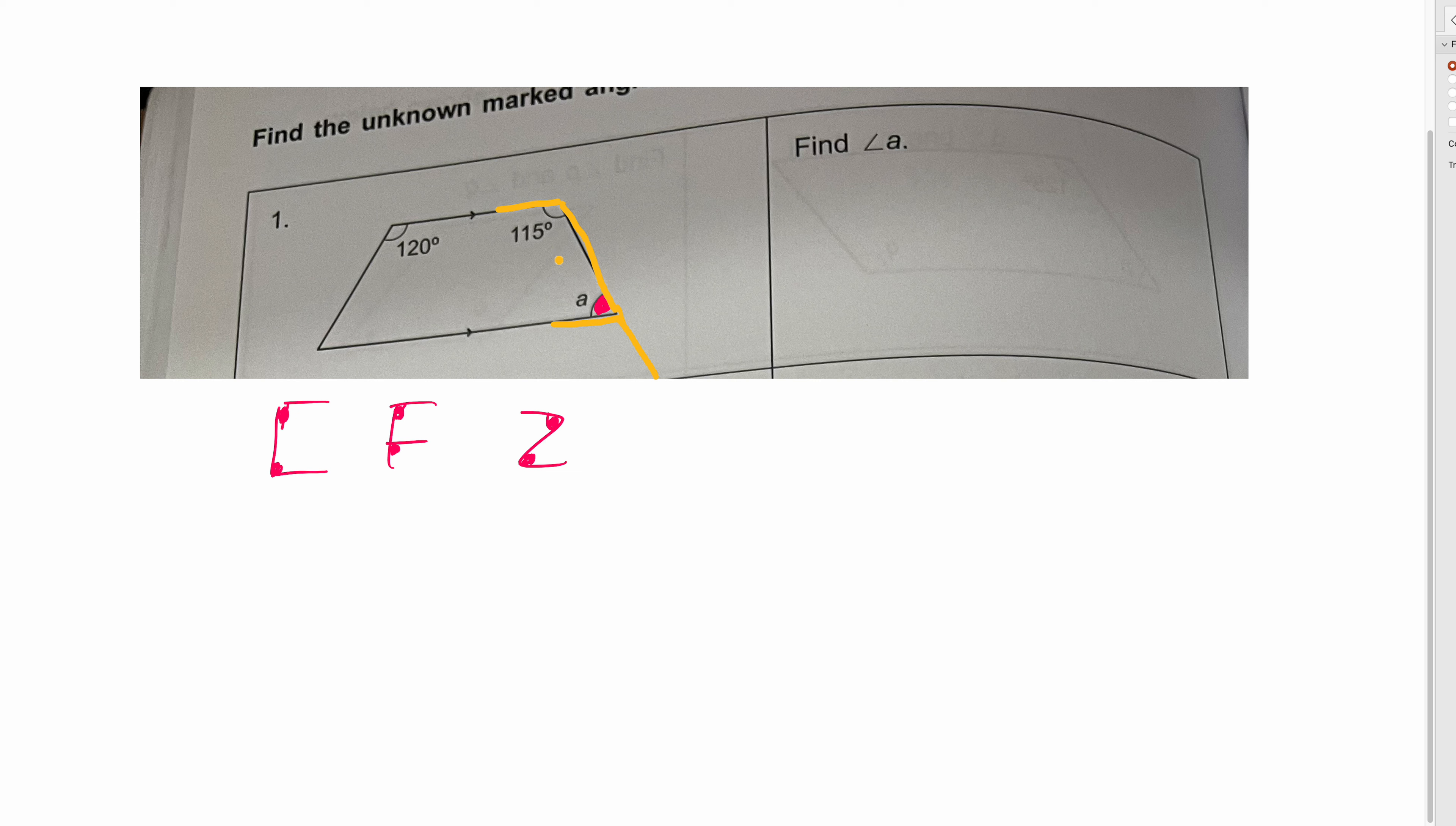So if you want to use F, what is F? F means, let me use a different color, if this is the angle, where's your angle that is the same as 115? It's here. Why? Because this angle is below the line. This is below the line, so therefore this angle is also below the line.